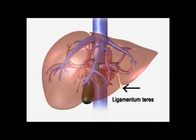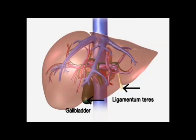Intraoperatively, the most obvious markings are the ligamentum teres and the gallbladder. The ligamentum teres occupies the anterior and inferior border of the falciform ligament and contains the obliterated umbilical vein. The falciform ligament is a thin membrane that runs posteriorly from the ligamentum teres to meet the triangular ligament centrally at the suprahepatic inferior vena cava. The continuation of the ligamentum teres on the undersurface of the liver is called the umbilical fissure, which contains the end branches of the inflow portal pedicles to the left liver.